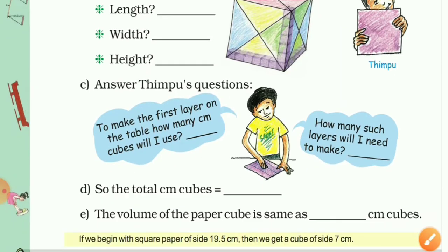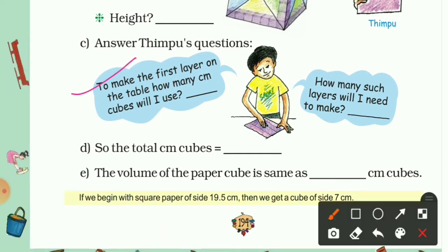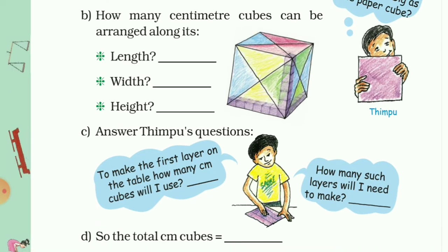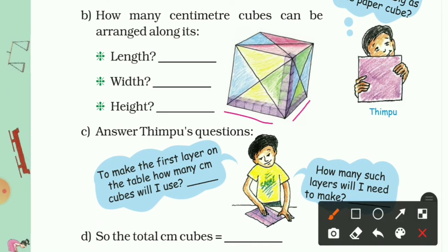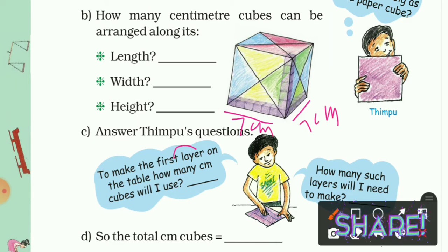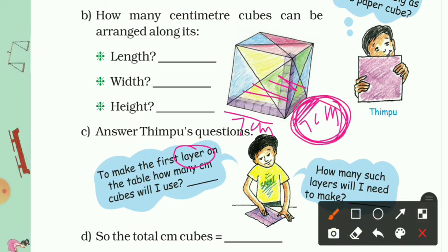Now let's answer Thimpo's questions. The first question is: to make the first layer on the table, how many 1 cm cubes will I use? Since the length and width are both 7 cm, we arrange 7 cubes lengthwise and 7 cubes widthwise. So we multiply 7 by 7, giving us 49 cubes in the first layer.